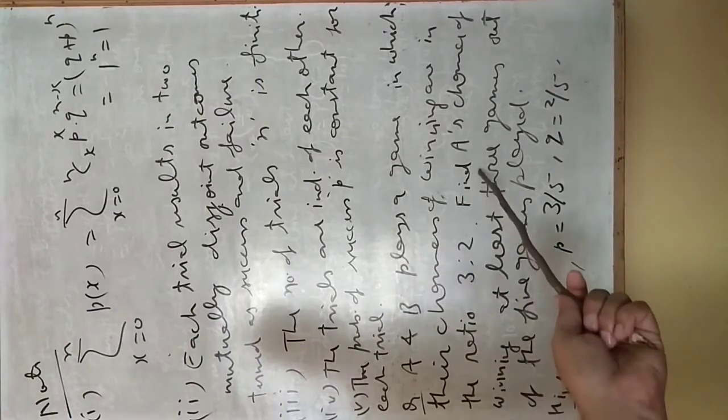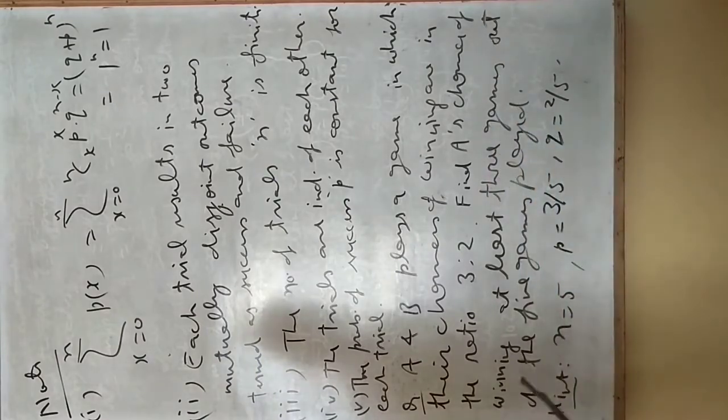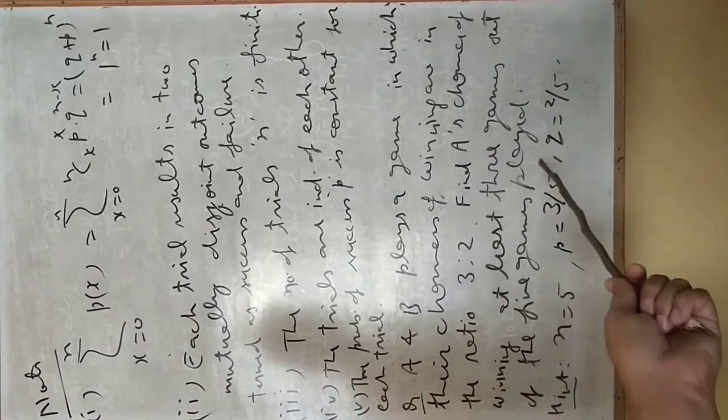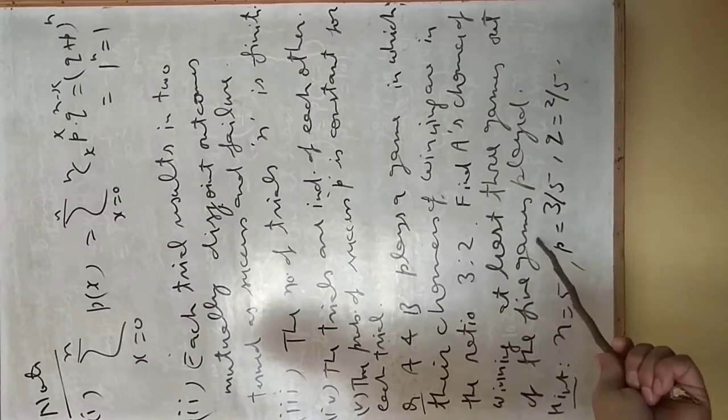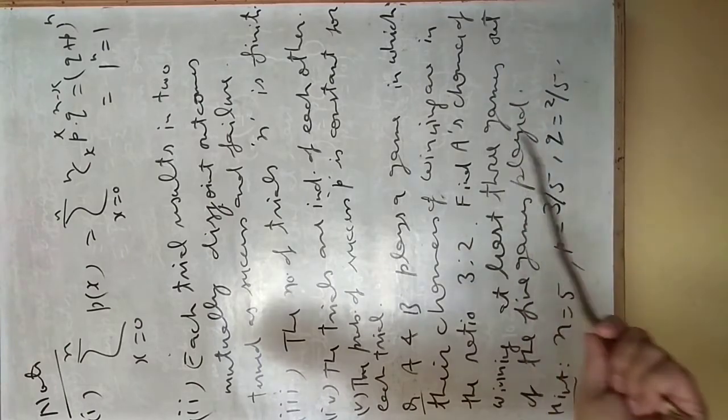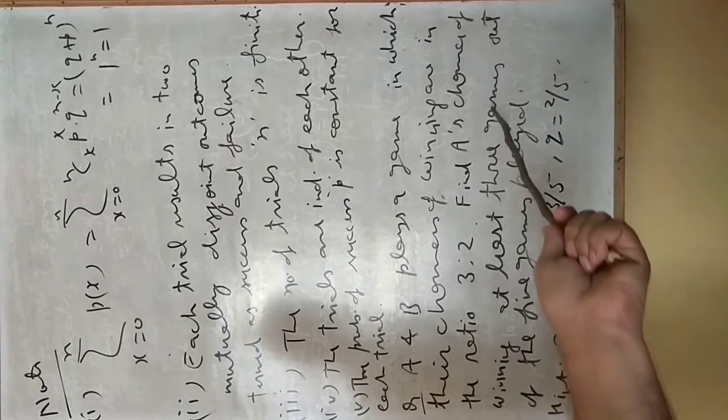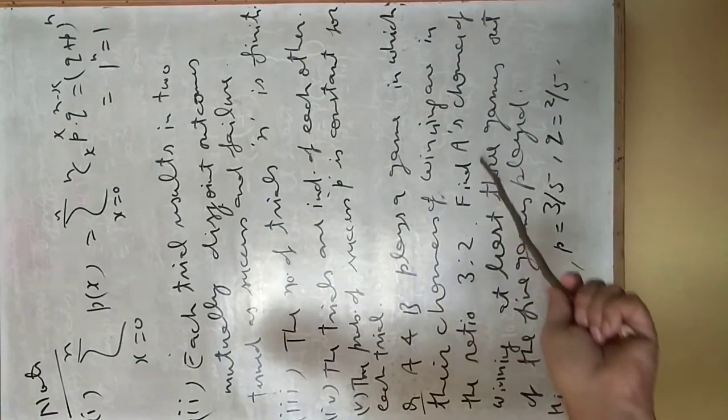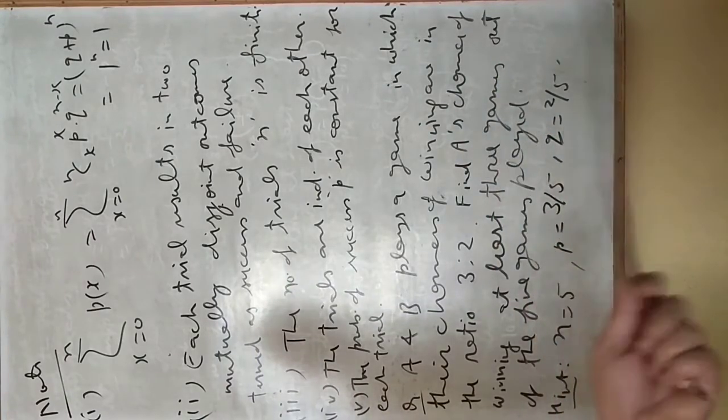So A's probability of winning will be 3/5 and probability that B wins will be 2/5. We need to find A's chance of winning at least three games out of the five games played. A and B both play five games and A wins three games, four games, or five games. It means A will win either three games or four games or five games.